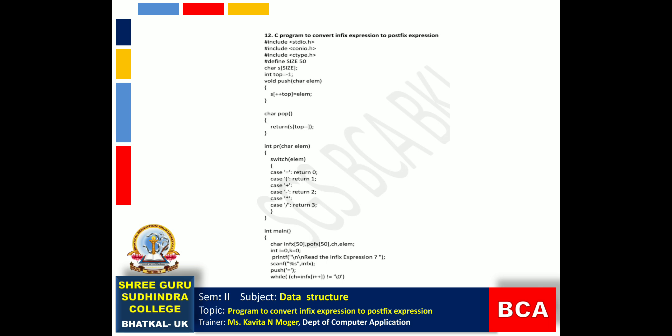In the main function, variables are declared: infix[50], postfix[50], ch, and element of type character. i and k are initialized to 0 of type integer. A print statement prompts the user, and scanf reads the infix expression. Initially, we push the equal-to symbol '=' onto the stack.